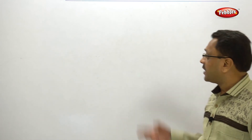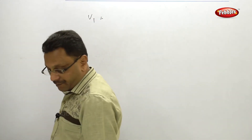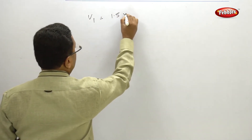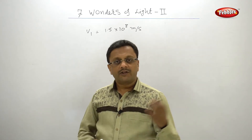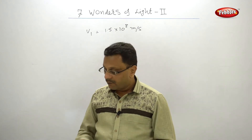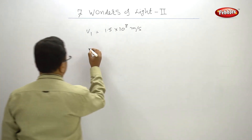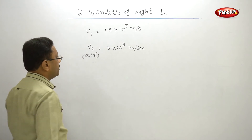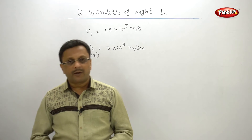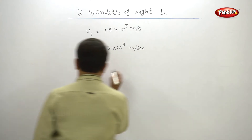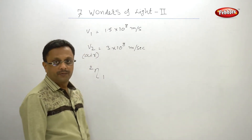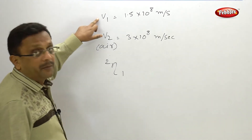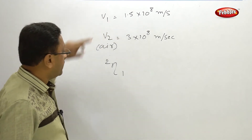Now let us move ahead and see a few examples which may be asked on this chapter. The examples are very simple. The first example: the velocity of light in a medium is 1.5 × 10⁸ meters per second. What is the refractive index of the medium? The velocity in air is 3 × 10⁸ meters per second. We want to find out the refractive index.